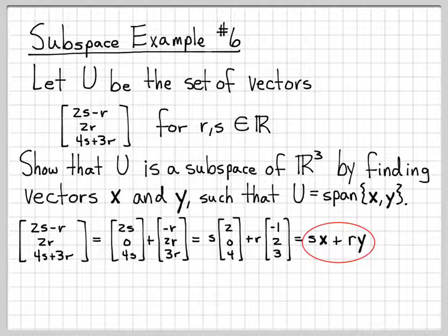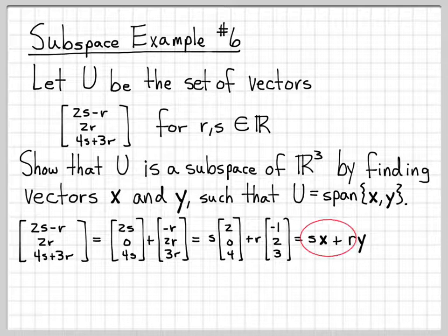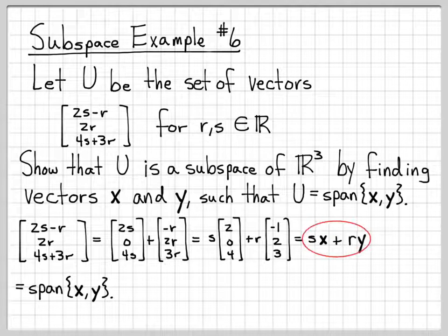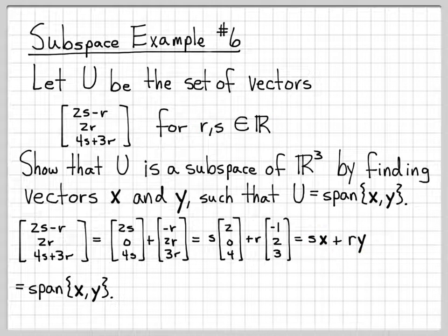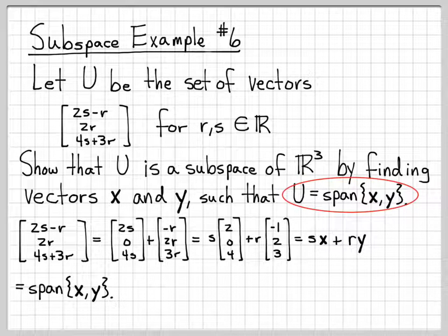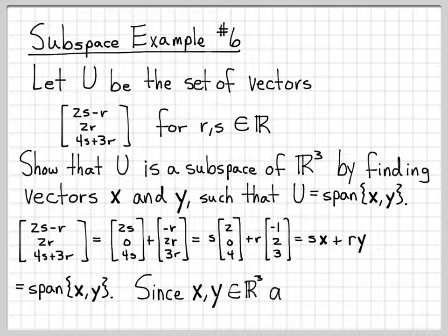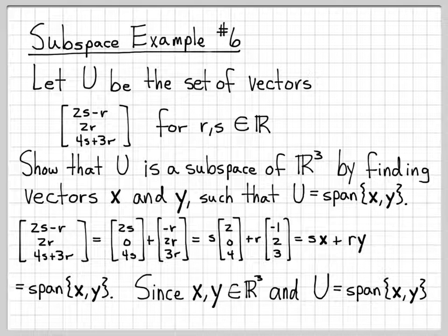Writing it this way is interesting because we can see that the set U consists of all linear combinations of x and y, which is exactly the span of x and y. Since s and r are arbitrary real numbers, what we have is by definition all linear combinations of x and y. So the set U is the span of x and y. Since x and y are in R³ and U equals the span of x and y, U is by definition a subspace of R³.